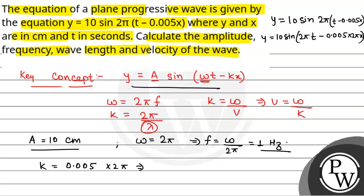We have v which is equal to ω/k. Omega is 2π and k is 0.005 × 2π.